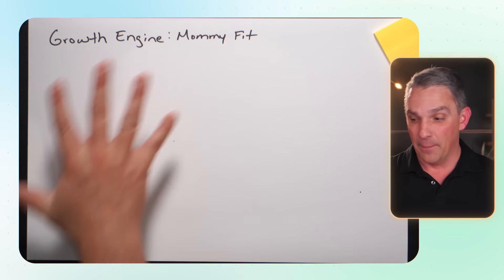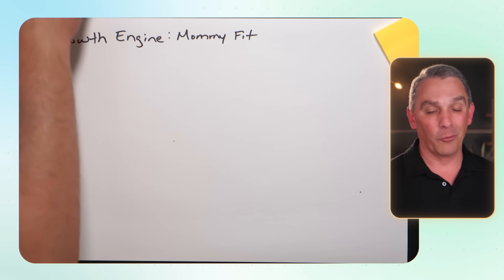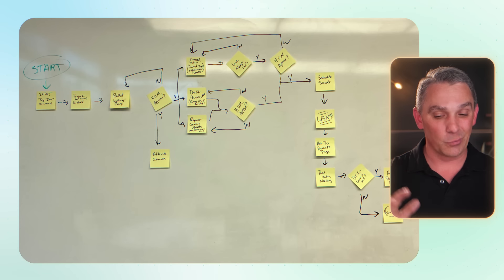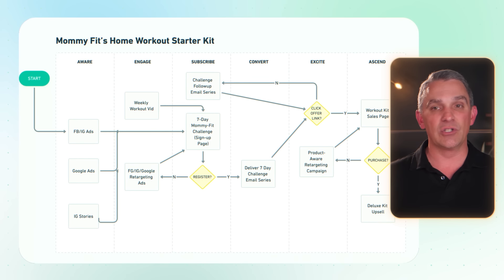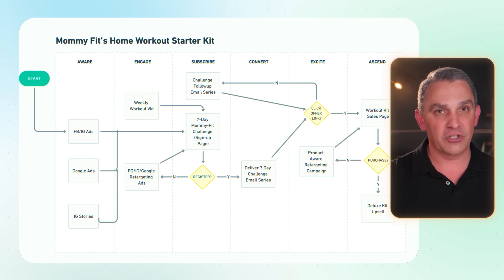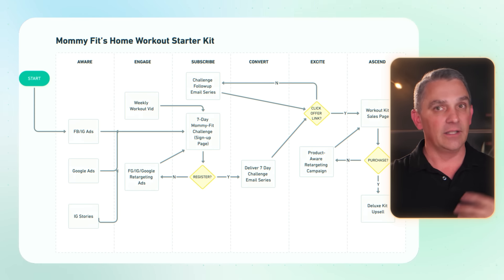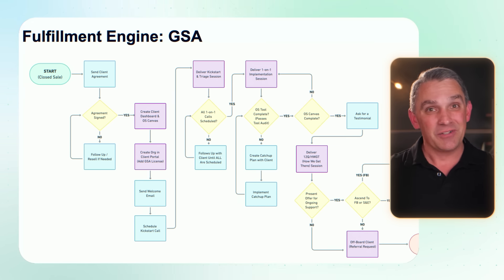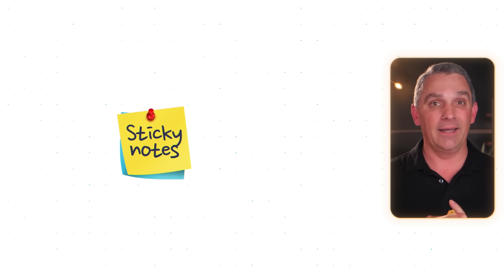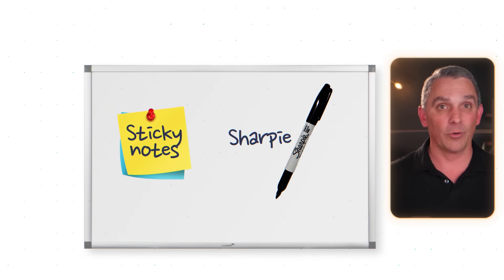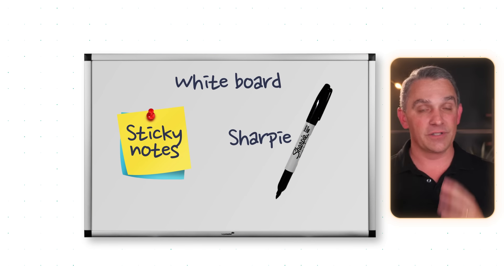I'm going to be demoing and showing you my impromptu whiteboard, and showing you how we use sticky notes — it's a really simple process. When you're done, it eventually turns into a prettier, more professional-looking flowchart like this. To get started, all you will need are some sticky notes, a Sharpie, and a whiteboard or some type of writing surface.